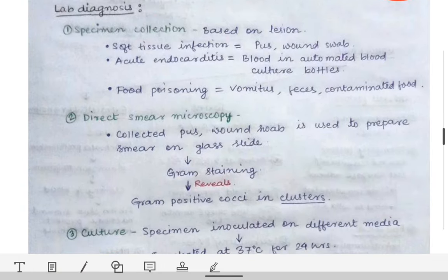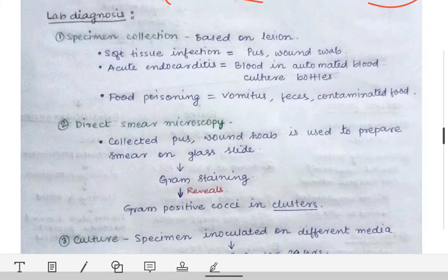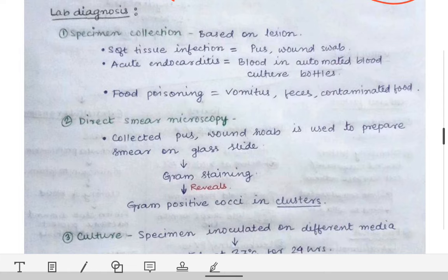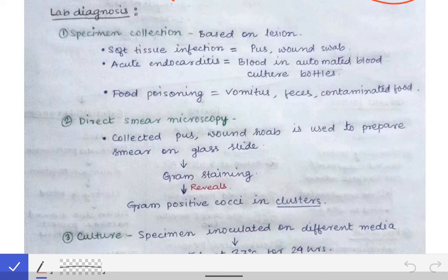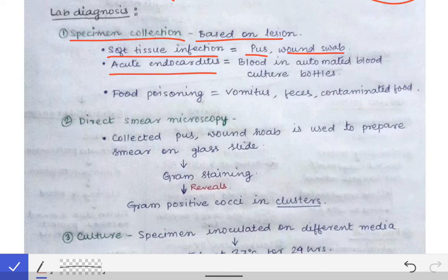For lab diagnosis of suspected S. aureus infection, first collect the specimen based on the type of infection. For soft tissue infections like cellulitis or folliculitis, collect pus and wound swab. For acute endocarditis, collect blood in automated blood culture bottles. For food poisoning, collect vomitus, feces, and contaminated food.